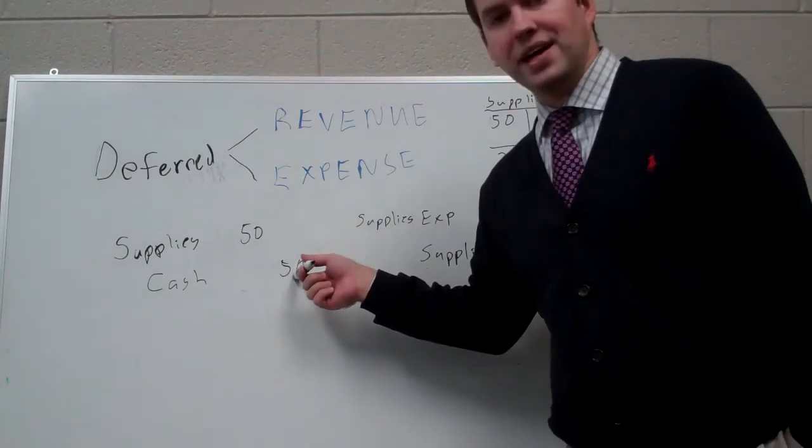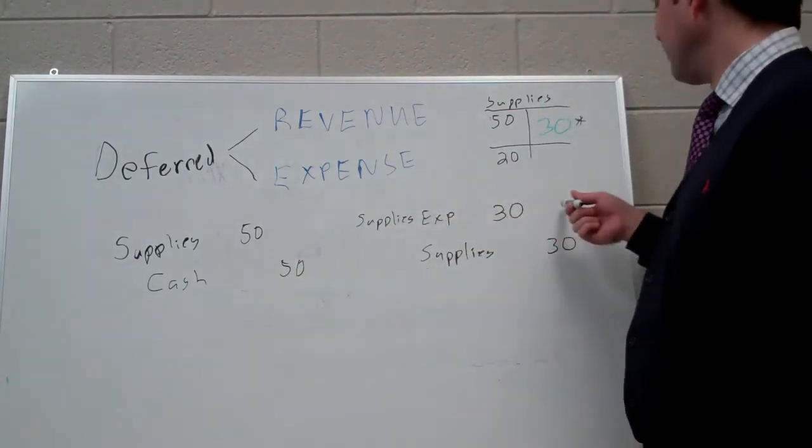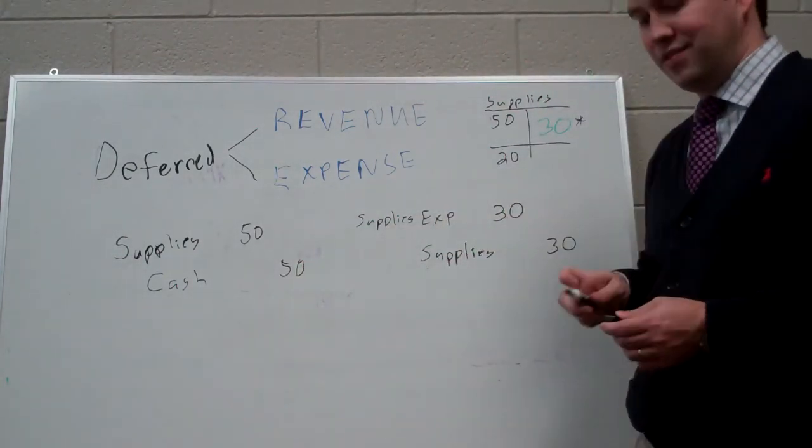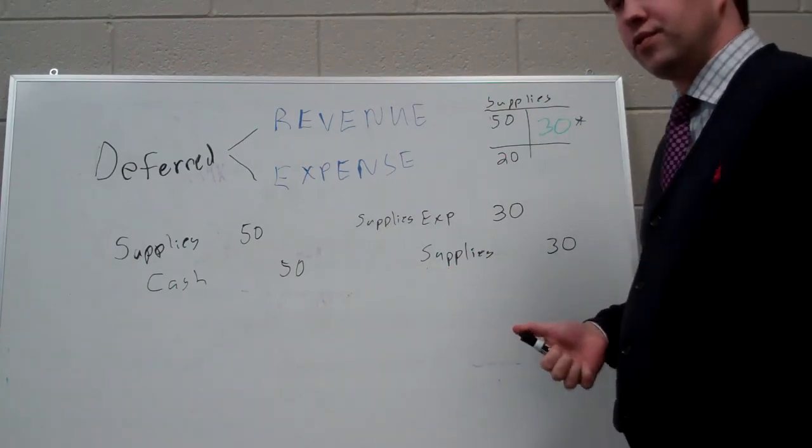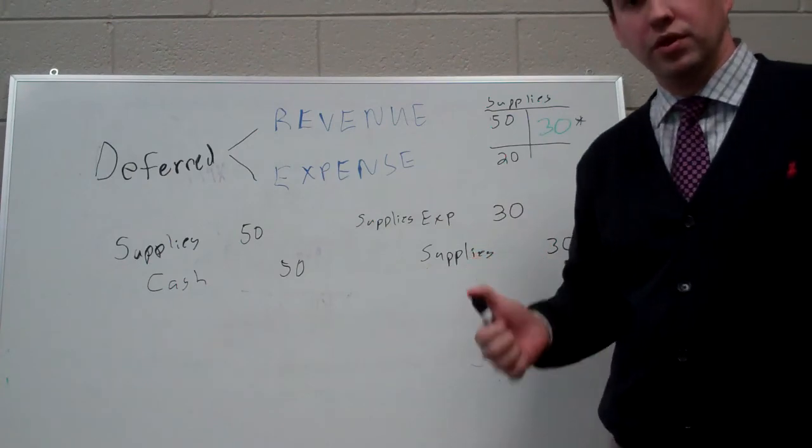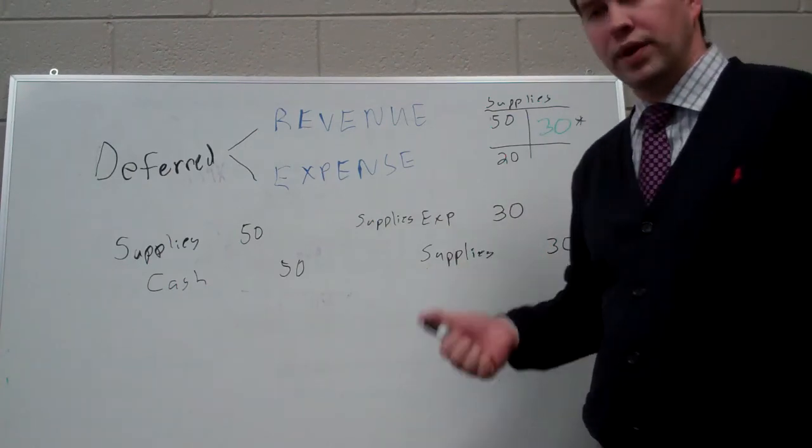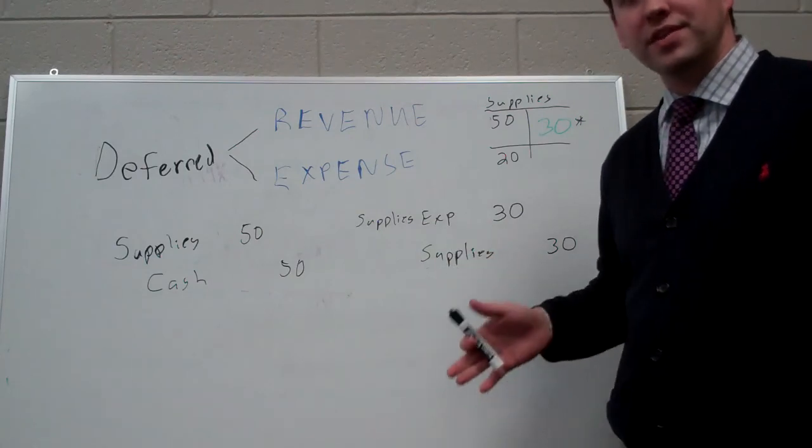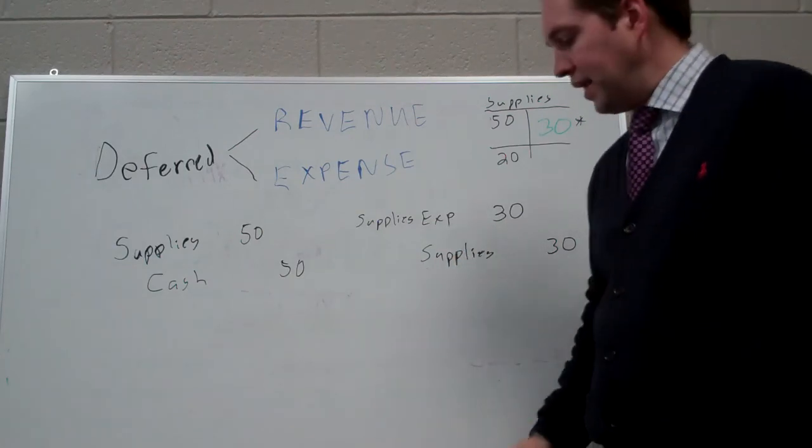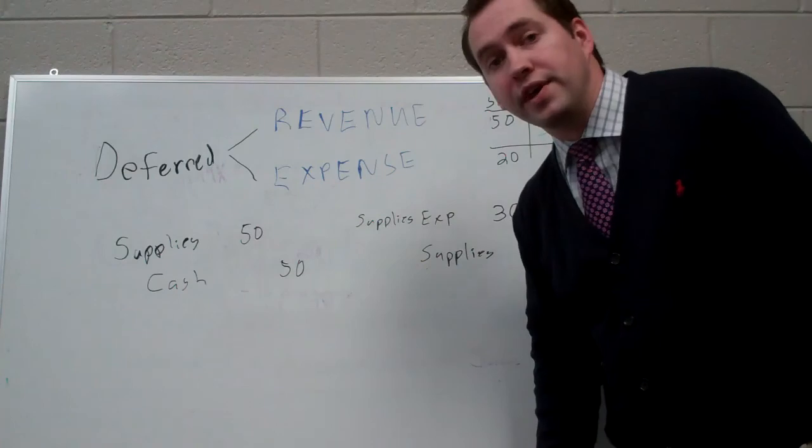We paid cash now, but we deferred expensing these supplies until later. So those are two examples of accruals and deferrals. One each of revenues and expenses. And you can have lots of examples of each. I hope that helps you as you prepare for your test.